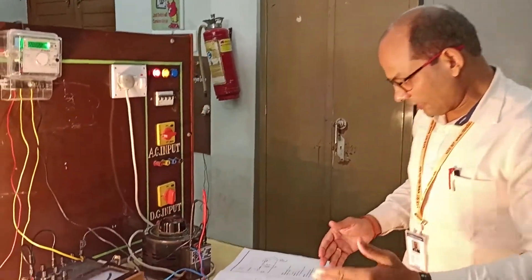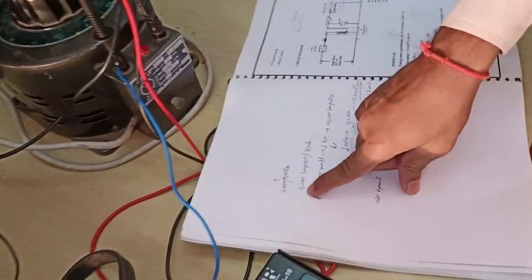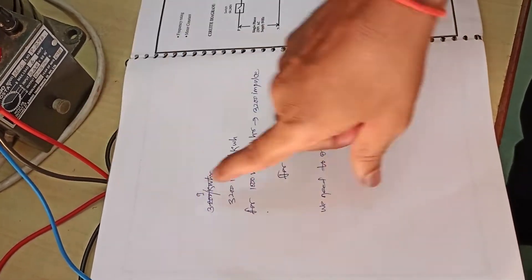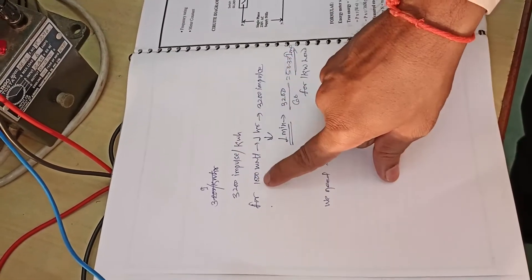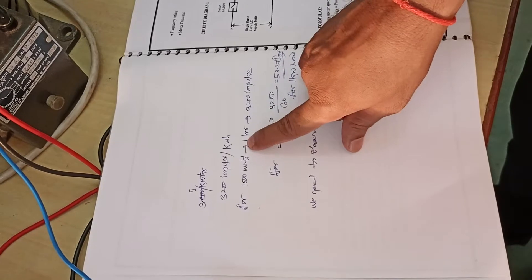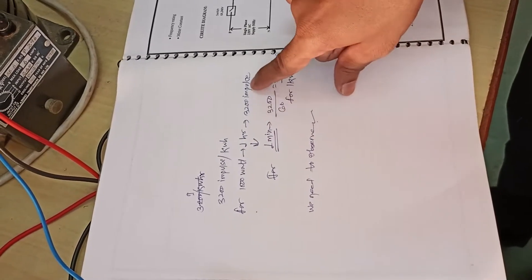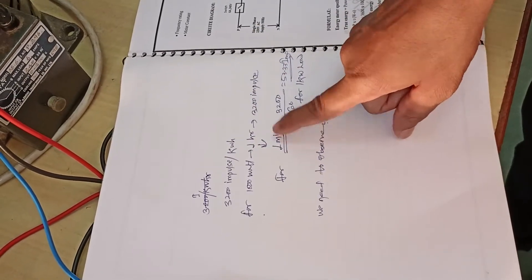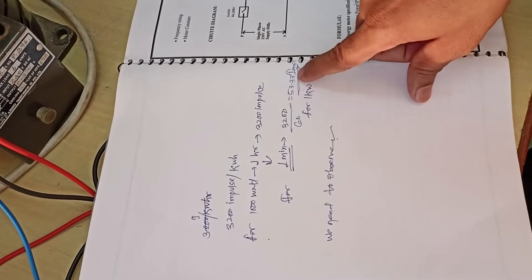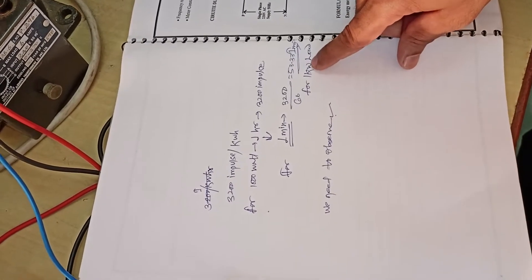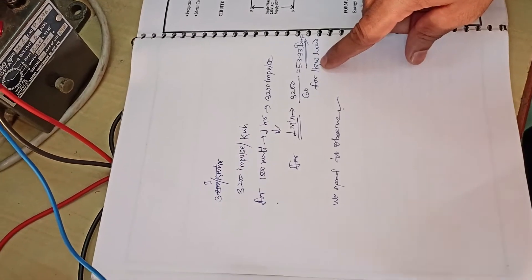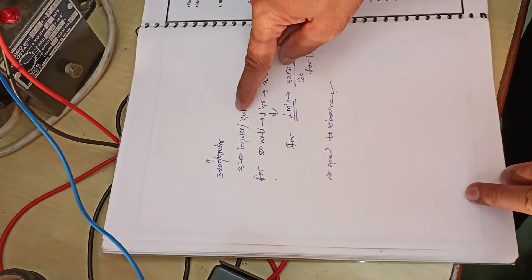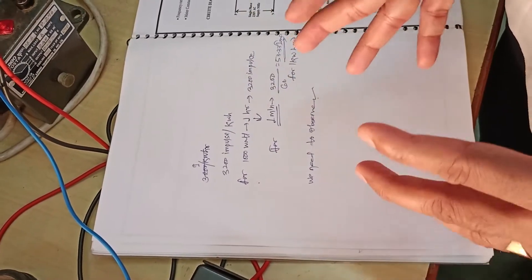Now we need to calculate the error. The reference rating is 3200 impulse per kilowatt hour. I have load of 1000 watt so for 1000 watt used for one hour it should take 3200 blinking. For one minute it will have roughly 53.33 impulse for one kilowatt load.